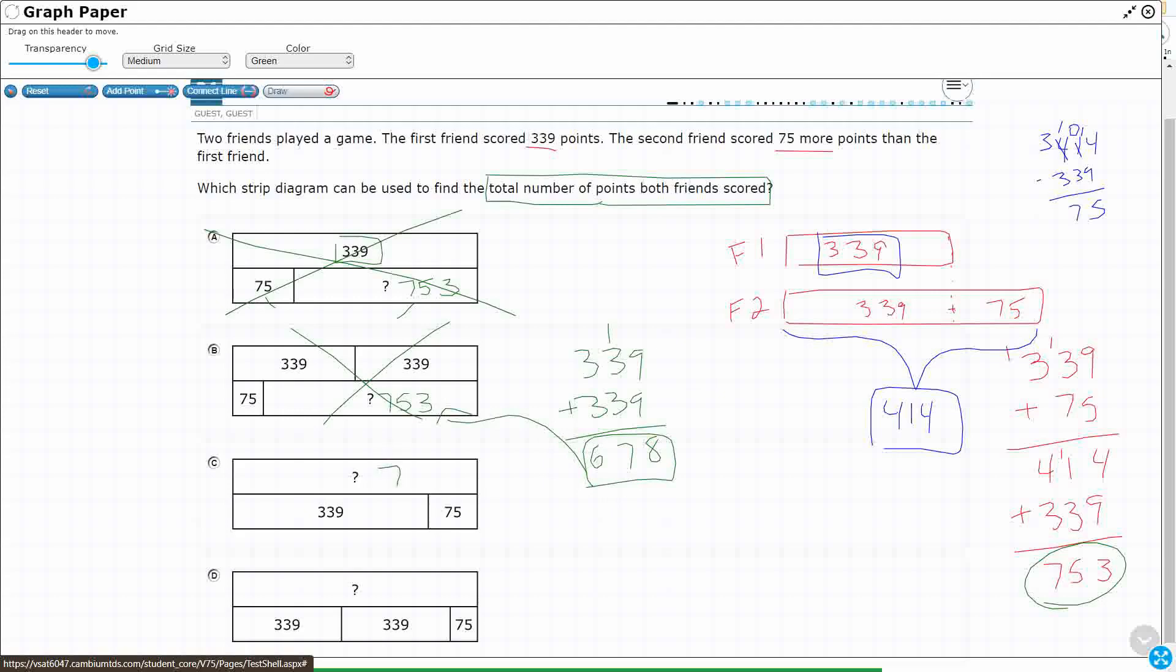Okay, so 753 is going to be 339 plus 75. I've already done 339 plus 75. That's 414. So look at this. We have the original 339 plus the 339 plus 75, which is my 414. That's what we did. So our answer here is D.